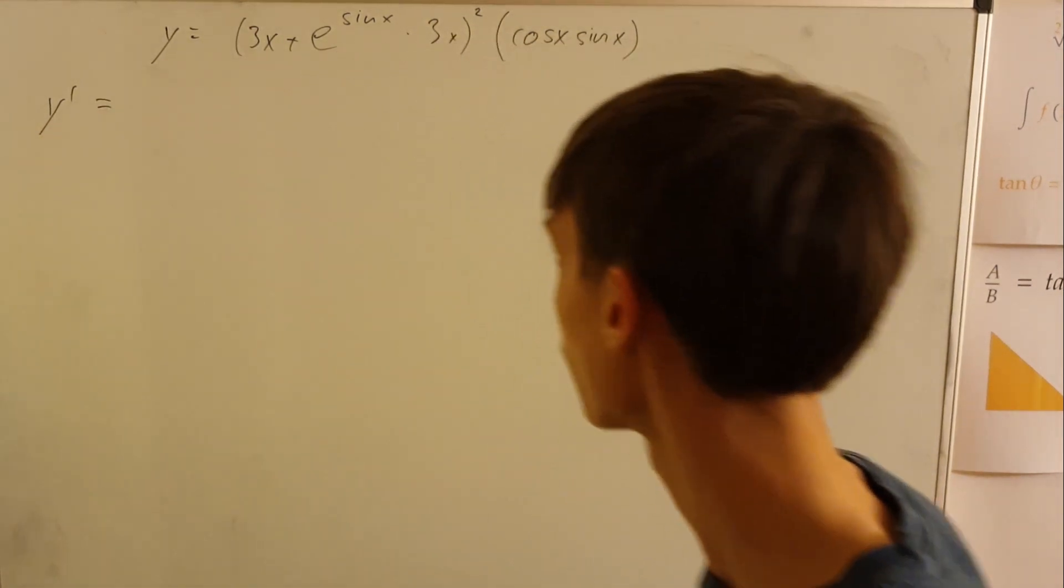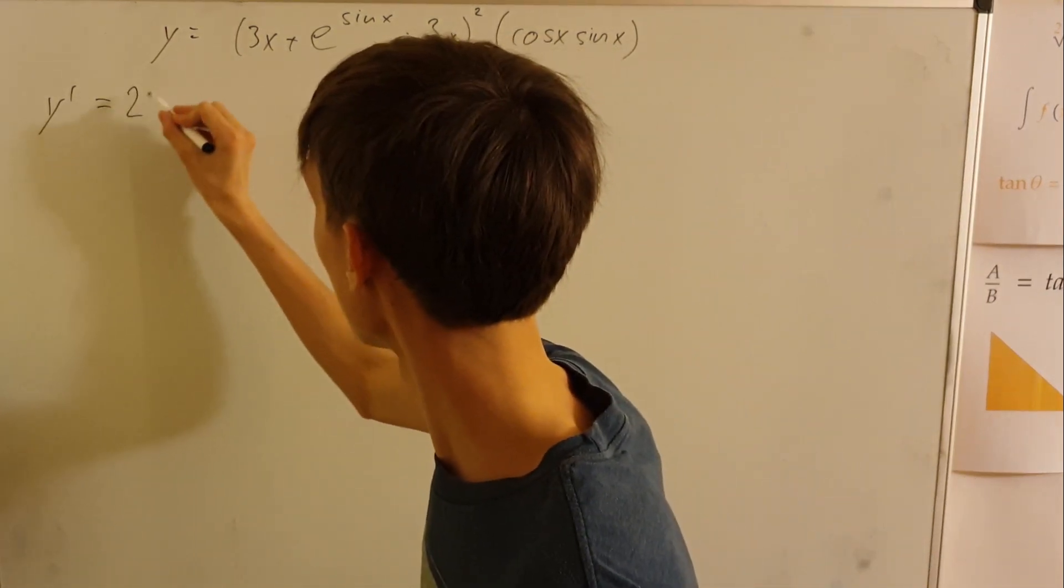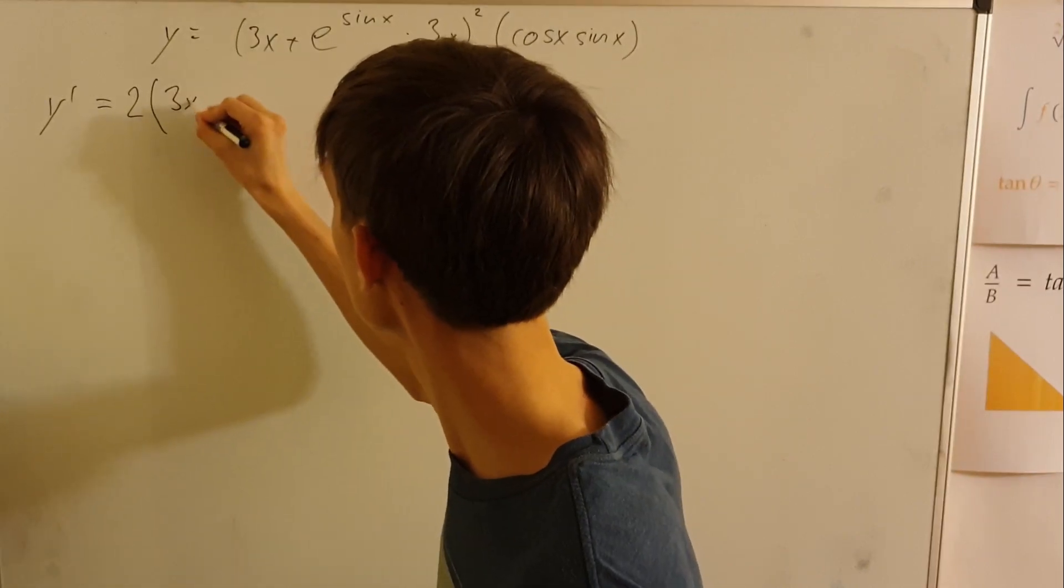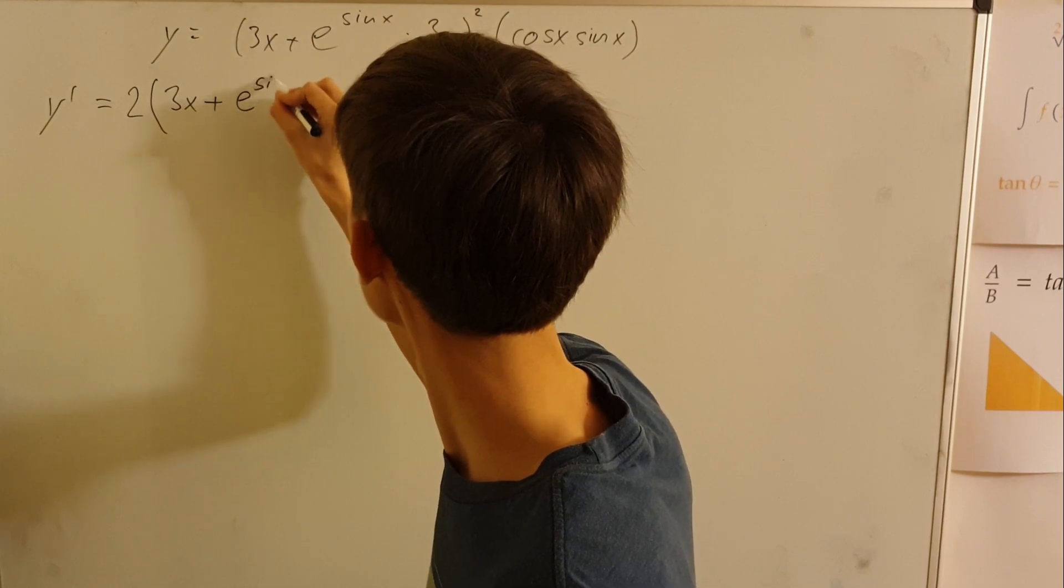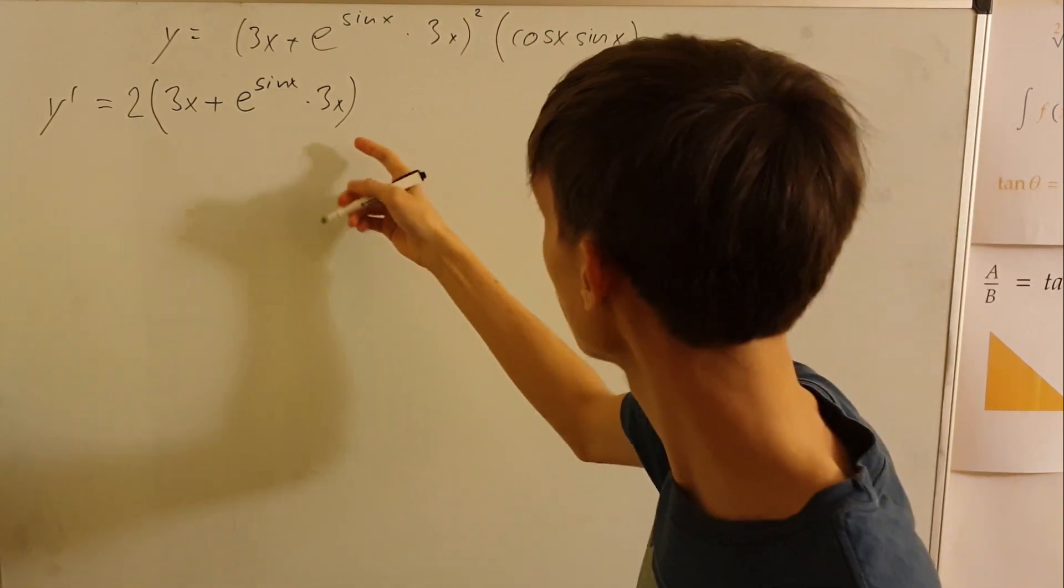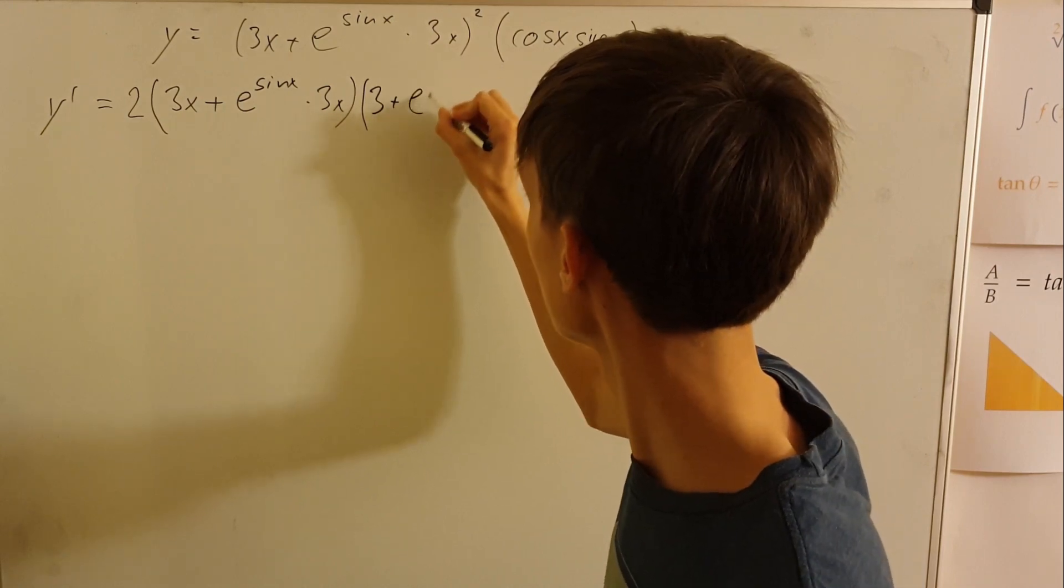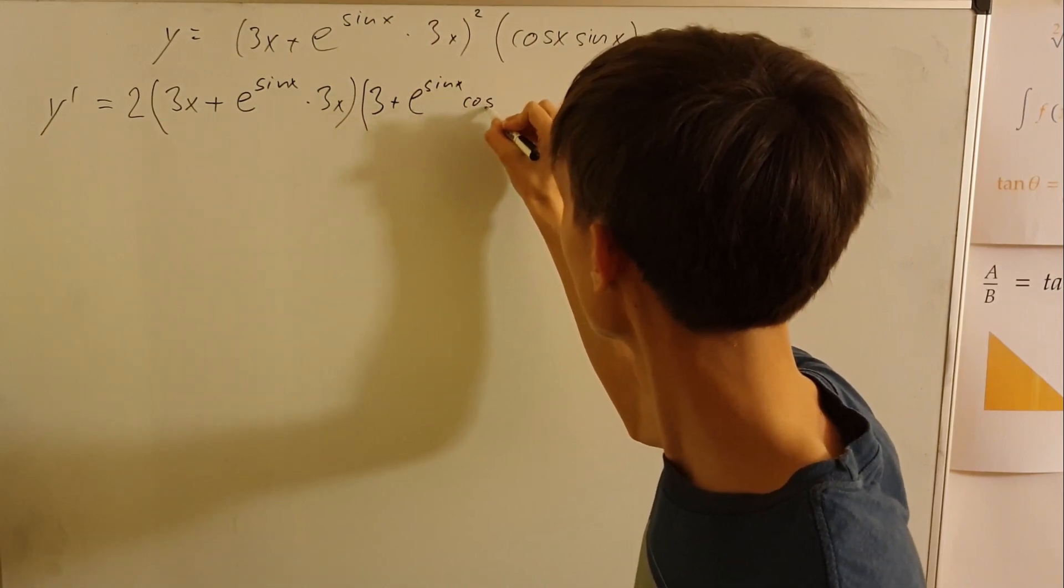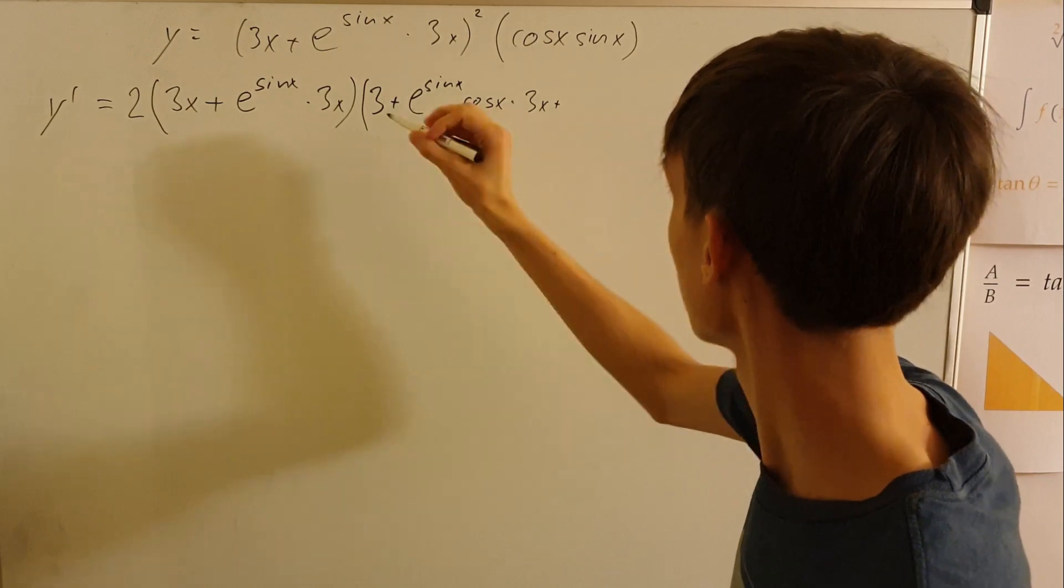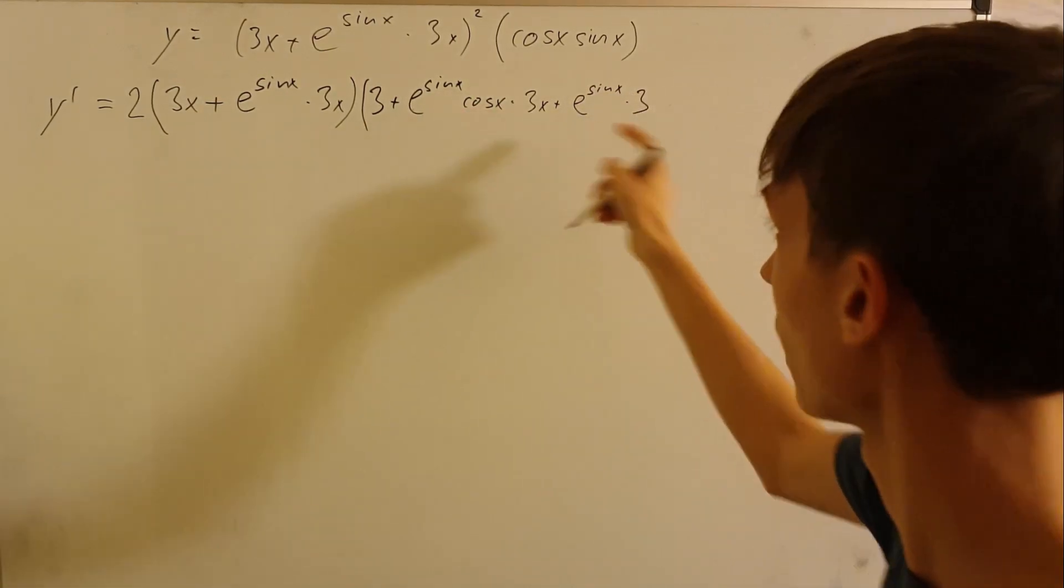So first of all the derivative of the first one times unchanged second one, which will be first of all the outer function applied to the inner one which is the power. So unchanged times the inner derivative here, this is chain rule for the first part of the product rule: 3 plus e to sin x cos x, and then 3x plus e to sin x times 3 because this is another inner product rule.